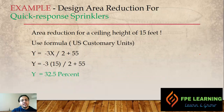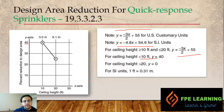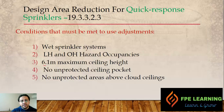Let's apply the formula for quick response sprinklers. If our ceiling height is 15 feet, we use the US customary formula: reduction = −3(15)/2 + 55 = −22.5 + 55 = 32.5 percent. So for a 15-foot ceiling with quick response sprinklers, we can reduce our design area by 32.5 percent. This is how we read the graph and apply the knowledge to select the best fire pump sizing while reducing cost.